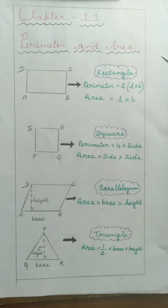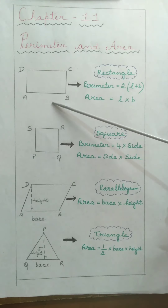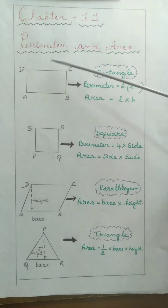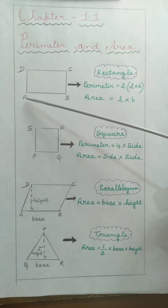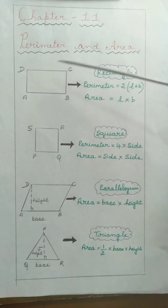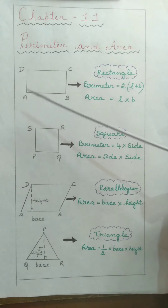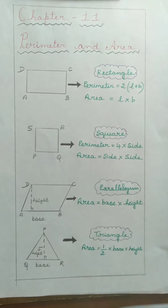Consider the first figure, a rectangle. In a rectangle there are 4 sides. AB is the length and BC is the breadth. The rectangle is a closed figure and its property is that opposite sides are equal: AB equals DC and BC equals AD. All angles in a rectangle are equal to 90 degrees, so angle A equals angle B equals angle C equals angle D.